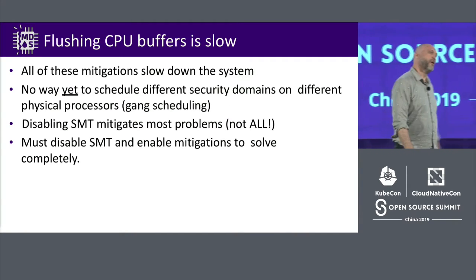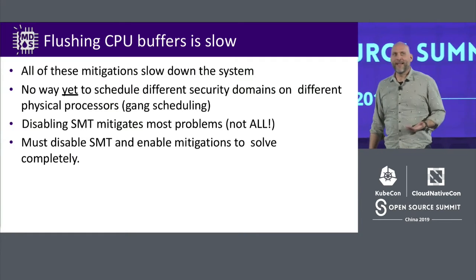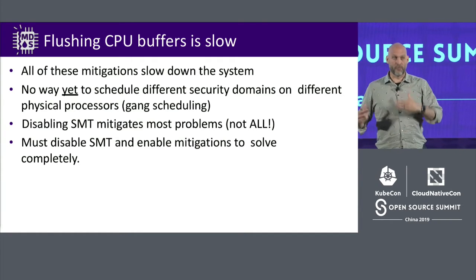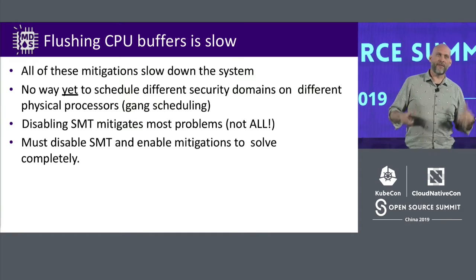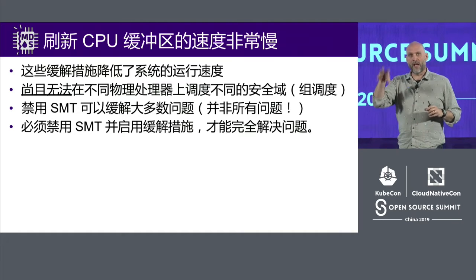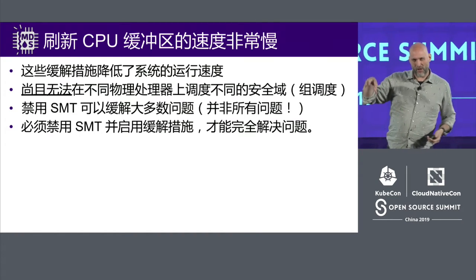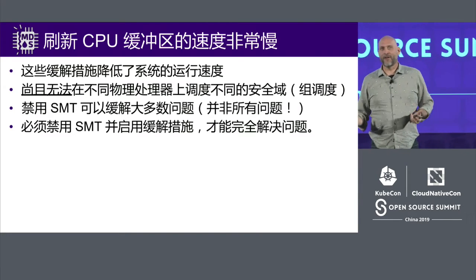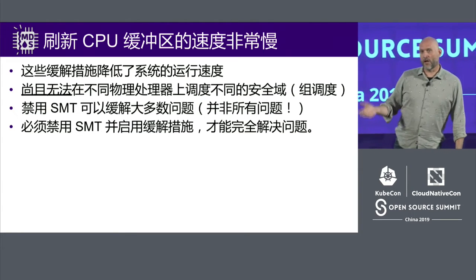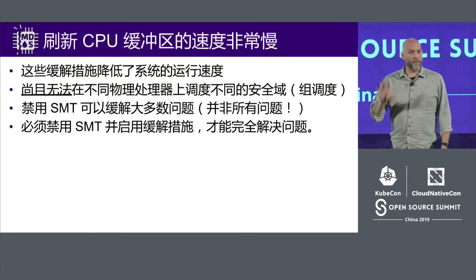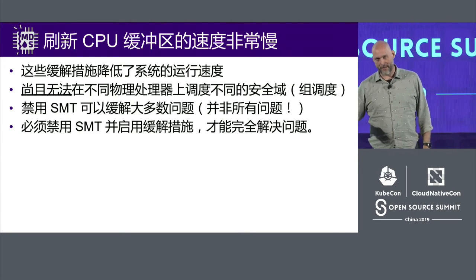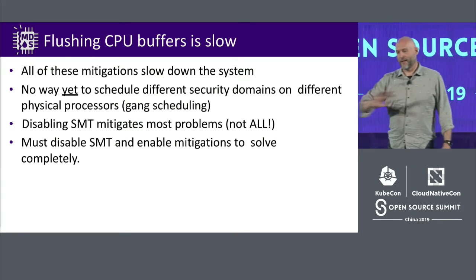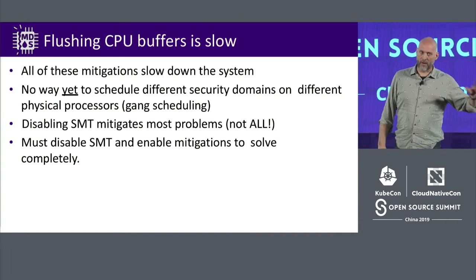Flushing buffers is slow — there's a reason we never did this before. The reason the BIOS never did this is because it slows things down. Every time you call into and out of the kernel, system calls that were traditionally fast now require flushing these buffers. A potential mitigation is gang scheduling — only running the same security-class processes on each logical CPU. Academically they've solved it; in reality not yet. Microsoft for Windows has this option but it slows your machine down. The best way to address all these issues is to disable hyperthreading and update the kernel. You have to do both.